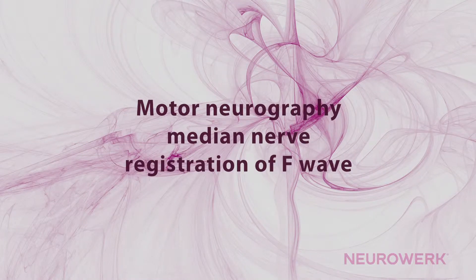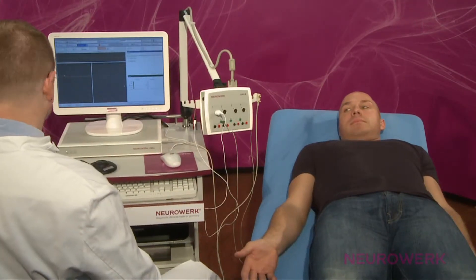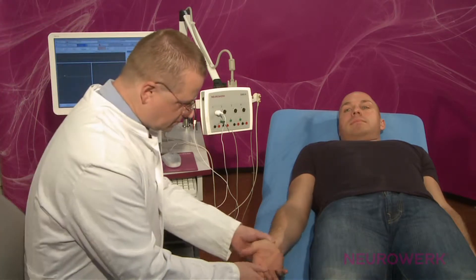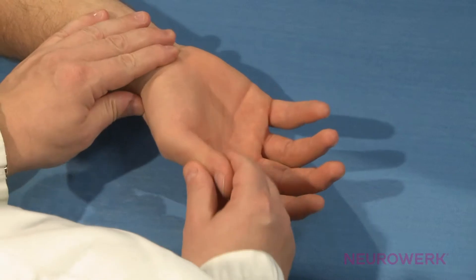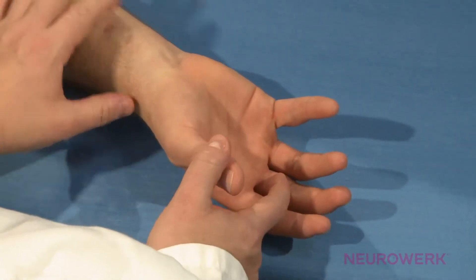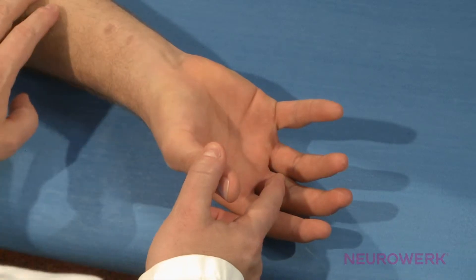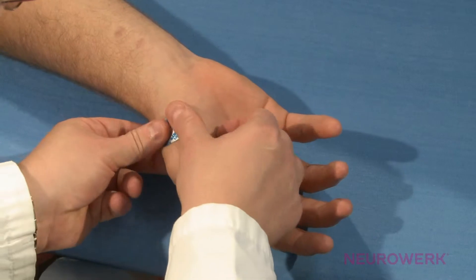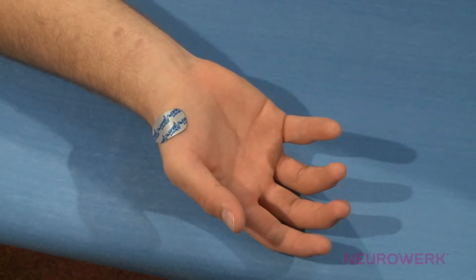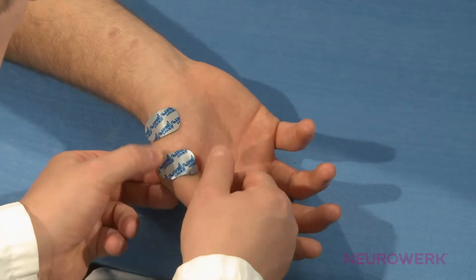Motor neurography of the median nerve. The recording of the F-Wave is clearly shown by the example of the median nerve. The placement of the recording electrodes is similar to the motor neurography of the median nerve. The active electrode is placed on the abductor pollicis brevis muscle, while the inactive electrode is placed on the anterior thumb joint.